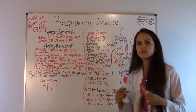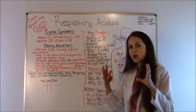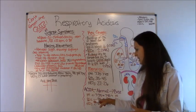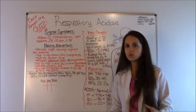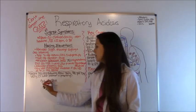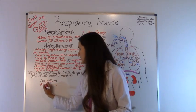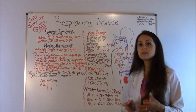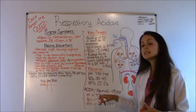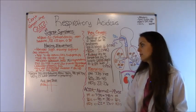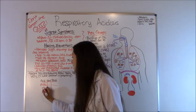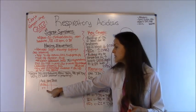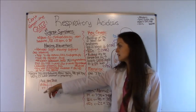PaCO2 48. We're thinking back to our table. We know that 35 to 45 is a normal PaCO2 level, and anything greater than 45 is acidotic. So we're going to put PaCO2 here because it's an acid. Then we're going to look at our pH. We know that a normal pH is 7.35 to 7.45. Anything less than 7.35 is an acid, so we're going to put pH under acid. We got a tic-tac-toe, three in a row. So we know that we are dealing with a respiratory problem.